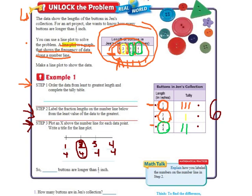Alright, so we're on our third step. Now we're going to put an X above the number line for each data point. Write a title for the line plot. Okay, first let's just do the X's. So if I go back and I look over here at my 1/4, I have 3 tally marks. So I'm going to have to make 3 X's on top of where it says 1/4.